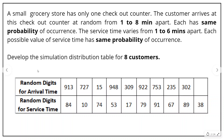A small grocery store has only one checkout counter. Customers arrive at this checkout counter at random from 1 to 8 minutes apart, and each has the same probability of occurrence — meaning a customer can come to the checkout counter between 1 to 8 minutes. The service time varies from 1 to 6 minutes apart, and each possible value of service time has the same probability of occurrence, meaning a customer will require a maximum of 6 minutes to receive service.